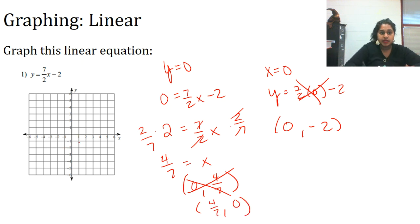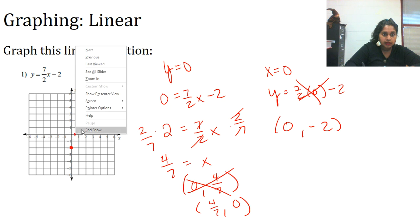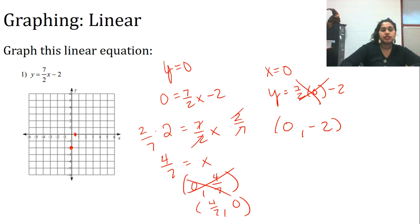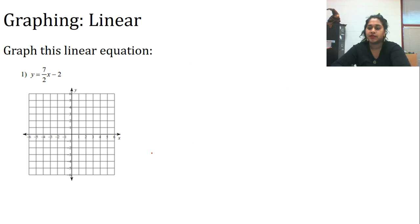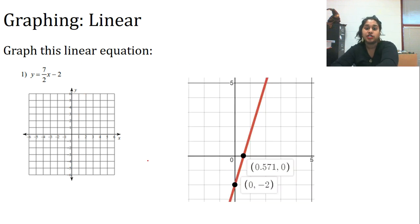Plot the points (0, -2) and (4/7, 0). The slope is positive, so we sketch a line going upward. We're just sketching — that's the whole purpose. Let's check the answer. There we go.